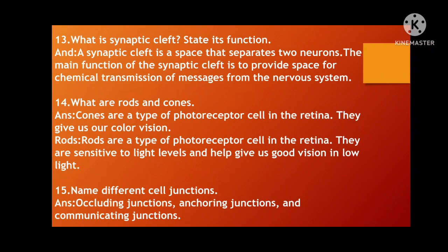Next: What are rods and cones? These are photoreceptors. Cones are a type of photoreceptor in the retina — they give us color vision. Rods are a type of photoreceptor in the retina that are sensitive to light levels and help us to see in low light. In dim light or at night, rods play a vital role. In the daytime, cones are important.